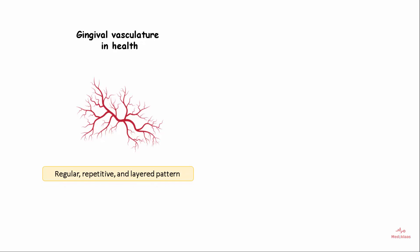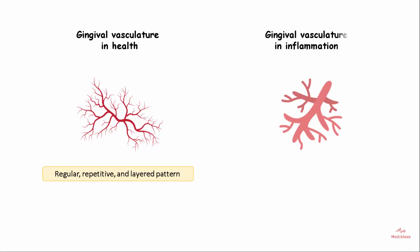In the absence of inflammation, the gingiva has a regular, repetitive, and layered pattern of vasculature. In the case of inflammation, the vascular pattern appears to be looped, dilated, and convoluted.